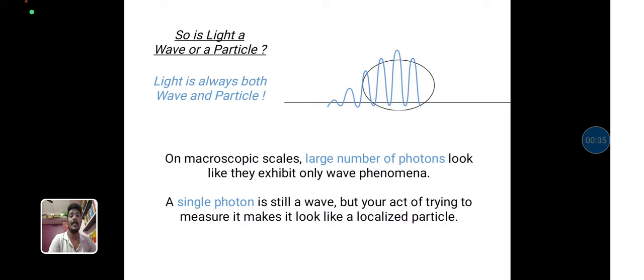The first one is, light is wave or particles. Light is always both waves and particles. It is also explained from the classical mechanic concept. On macroscopic scale, large number of photons look like they exhibit only wave phenomena.